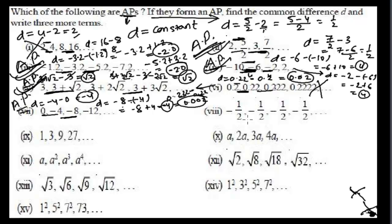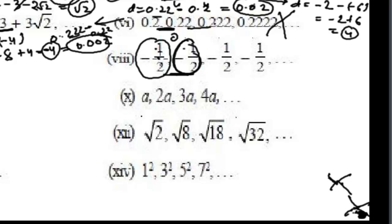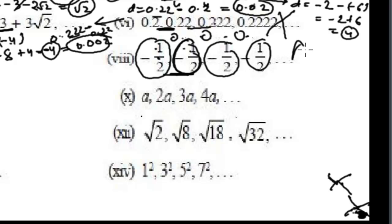The next sequence is -1/2, -1/2, -1/2... Since all terms are the same, the common difference is 0 every time. The second minus first is 0, the third minus second is 0, and so on. Since the common difference is constant at 0, this is an arithmetic progression. Note that d can be 0, greater than 0, or less than 0.